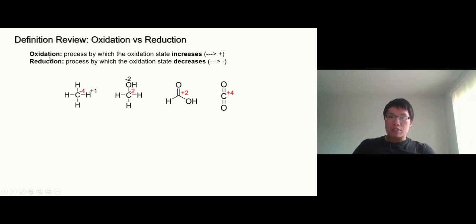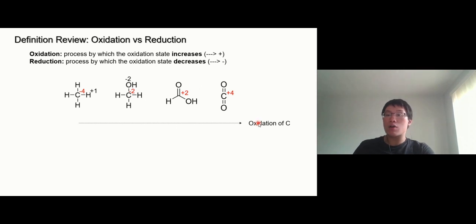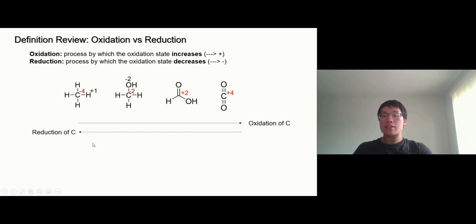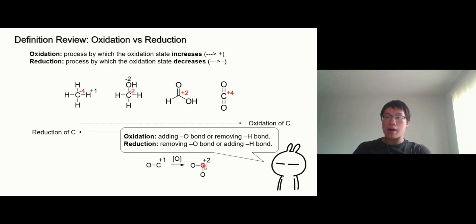Now let's talk about oxidation reactions and reduction reactions. The oxidation reaction is the process that increases the oxidation number. If you go from methane and add one oxygen, two oxygens, or four oxygens, the oxidation number keeps increasing — that is the oxidation process. If you start with carbon dioxide and do a reaction to get methane, the oxidation number decreases from plus four to minus four — that is what we call a reduction reaction.